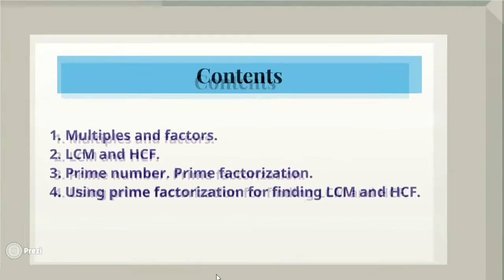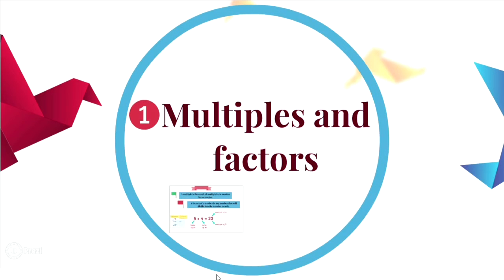Let's go to the first question about multiples and factors. A multiple is a result of multiplying a number by any integer. A factor of a number is a number that will divide this number exactly. For example, 5 multiplied by 4 equals 20. So 20 is a multiple of 5 and 4, but 5 and 4 are the factors of 20.